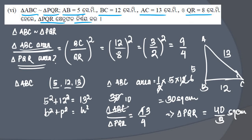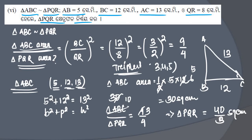The trick here was to recognize that 5, 12, 13 is a Pythagorean triplet, which allowed us to directly find the area of triangle ABC.